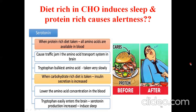After a carbohydrate-rich meal you may feel sleepy, while a protein-rich meal causes alertness. When a high-protein diet is consumed, many amino acids compete at the amino acid transport system in the brain, and tryptophan — being the bulkiest — enters slowly, causing alertness. After a carbohydrate meal, insulin secretion lowers amino acid concentration in blood, allowing tryptophan to enter the brain easily, where it forms serotonin and induces sleep.